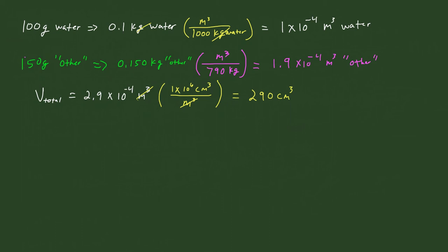Now let's deal with the mass. The mass is really easy — we have 100 grams of water and 150 grams of the other fluid, so the total mass m_total is going to be equal to 100 plus 150, which is 250 grams.